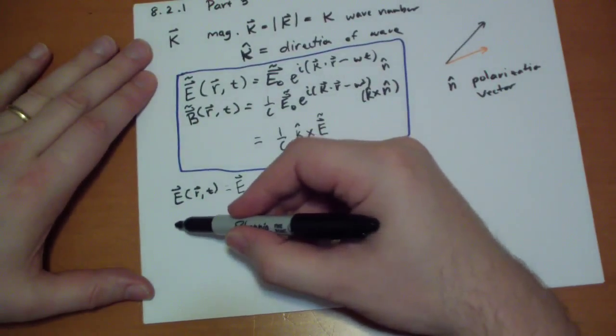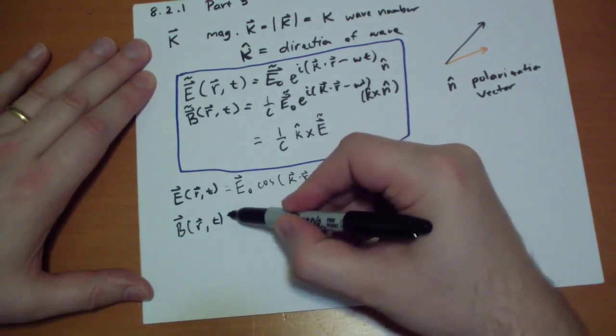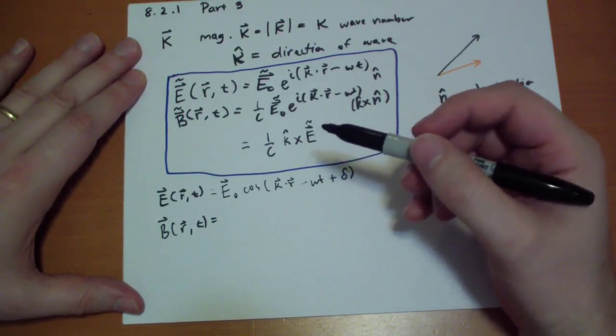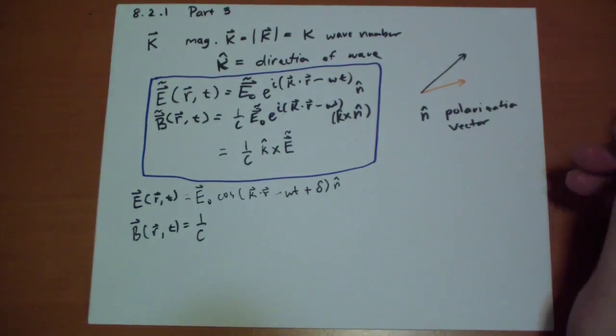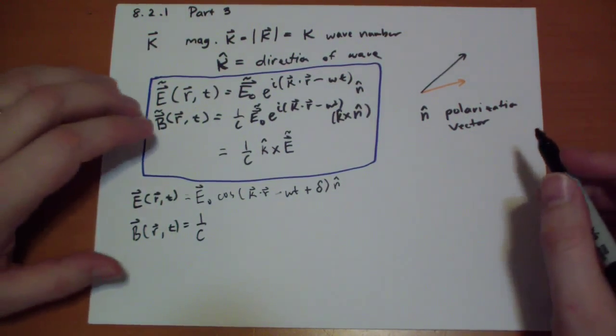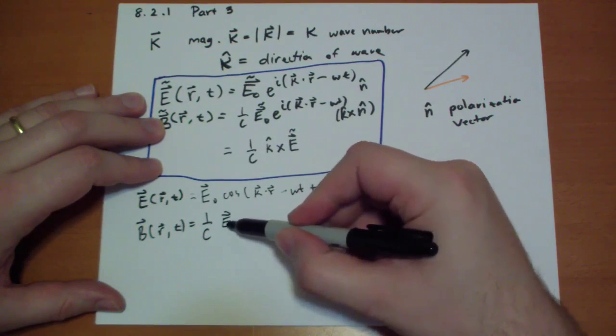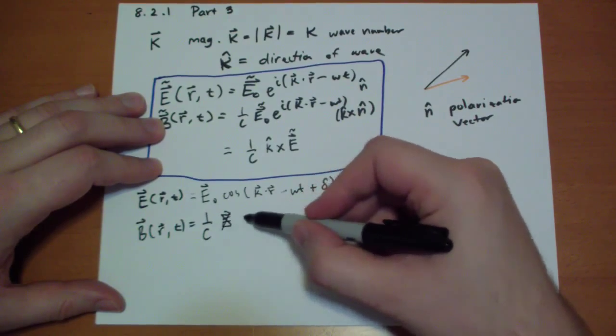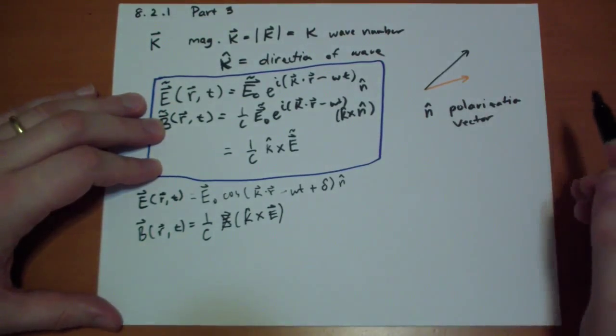And the B vector has to equal 1 over C times that. This is in the n-hat direction, and the B vector has to equal 1 over C. I forgot my kappa hat cross E vector.